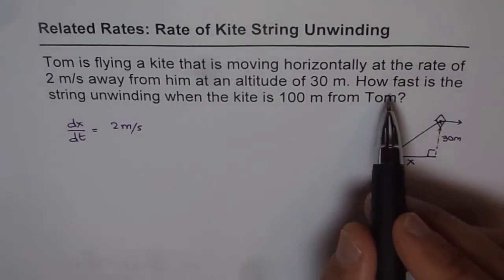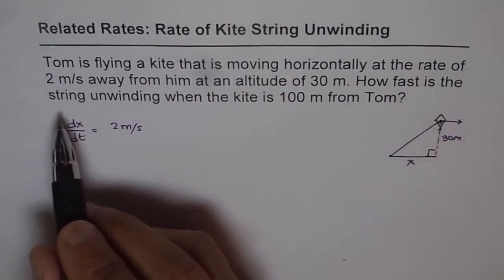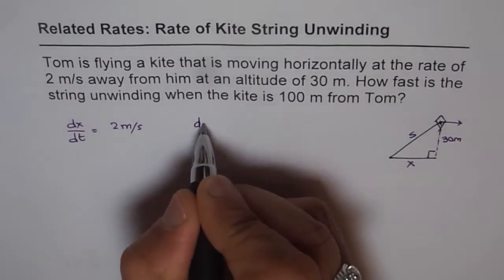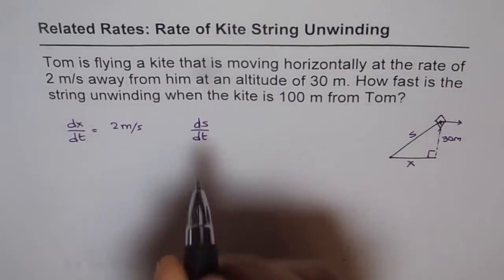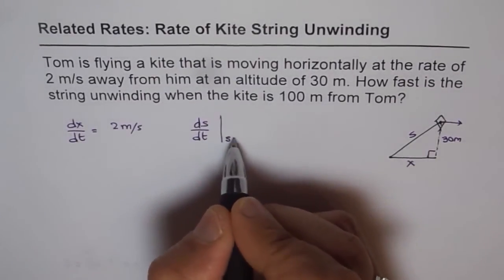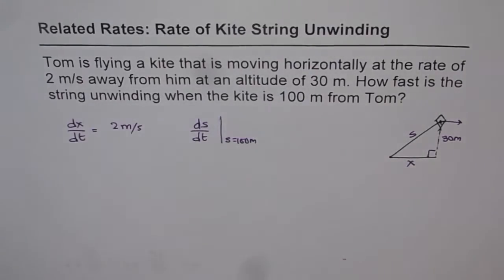Now what we need to find is how fast is the string unwinding. Let's say this is the string. So we need to find ds/dt when the kite is 100 meters away from Tom, when s equals 100 meters. This is what we need to find.